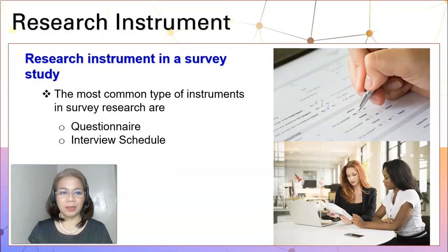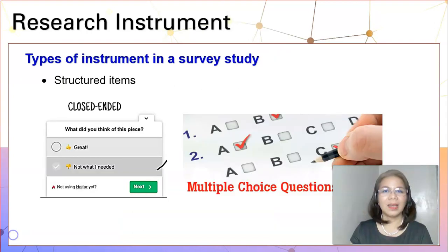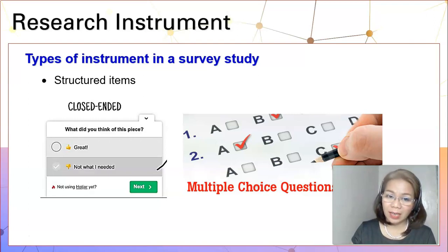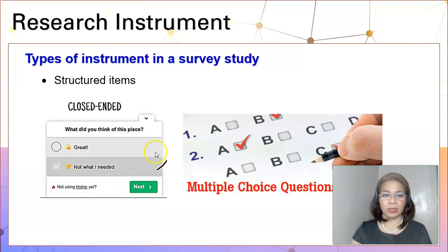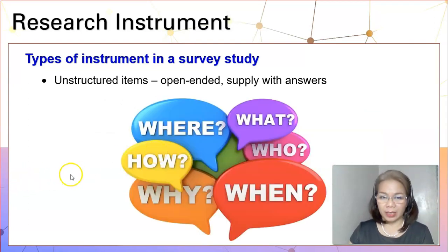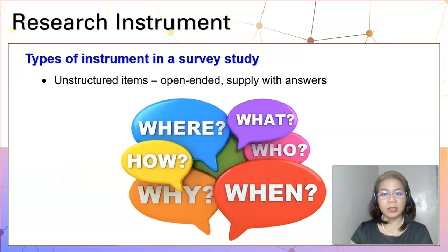In my previous videos, you have learned that the most common type of instruments used in survey research are questionnaire and interview schedule. The question items in your survey instrument could be structured items, meaning that your questions could be either closed-ended or multiple choice questions, meaning that your respondents will not supply any other answers aside from the ones you have indicated in your research questionnaire. Or it can be unstructured items, meaning that your questions are open-ended and your respondents will need to supply answers to your question items.